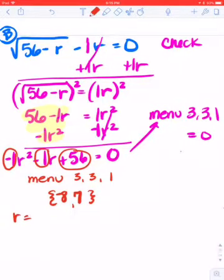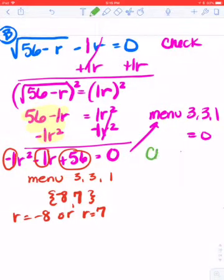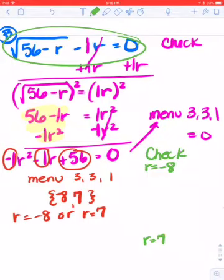Which means r equals negative 8 or r equals 7. Now our problem is we need to check both answers. So we need to check it for negative 8 and we need to check it for 7. And I'm going to start by going up here and getting the equation again and writing it right underneath it. That way I have exactly what I'm going to plug into.